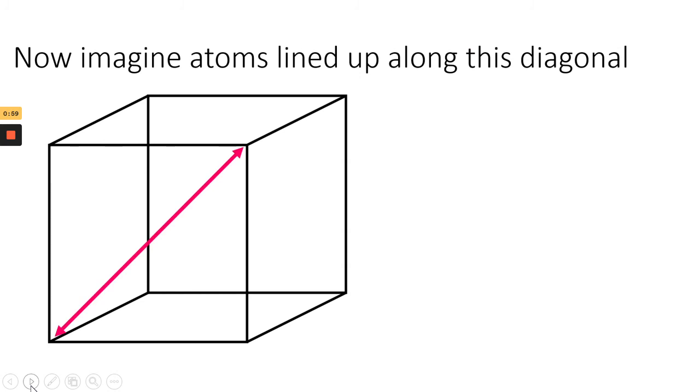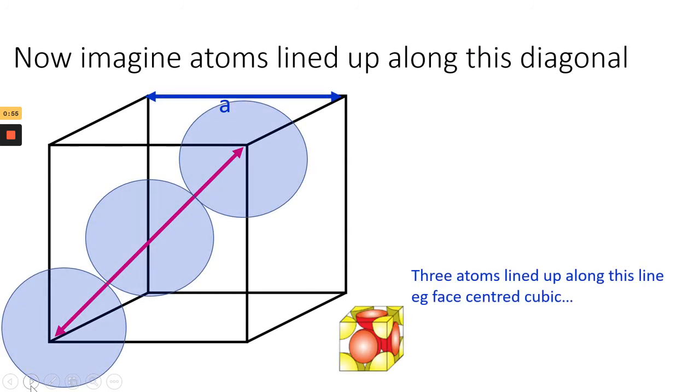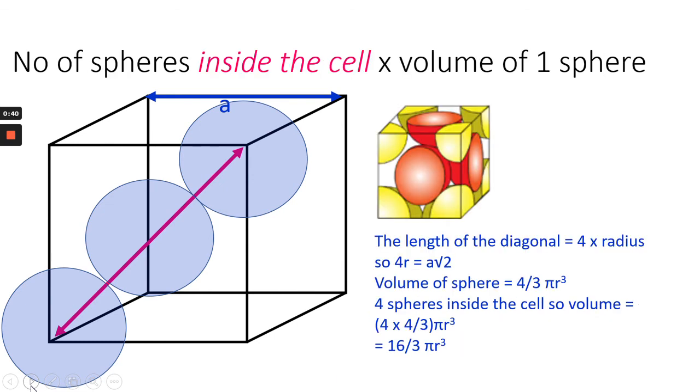So if we imagine atoms lined up along this diagonal, like this, and think of them as atoms inside a cube. So therefore, the value 4R is going to be the same as A root two that we just worked out. So the length of the diagonal is four times the radius, so 4R is A root two.